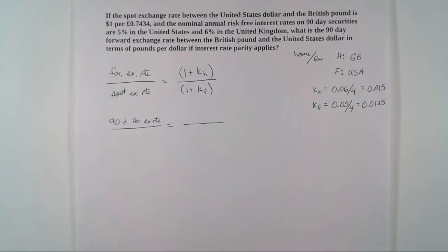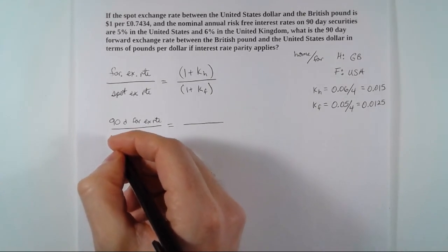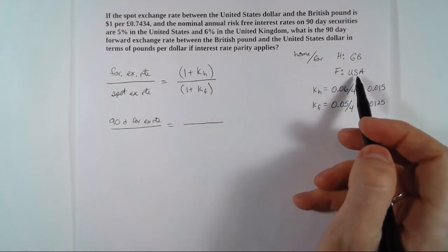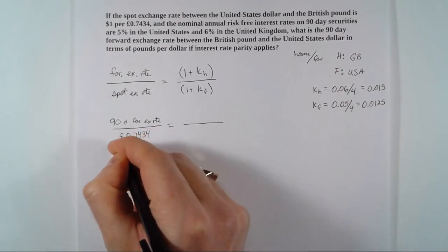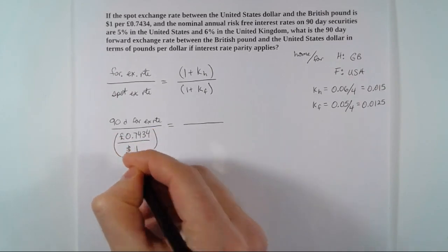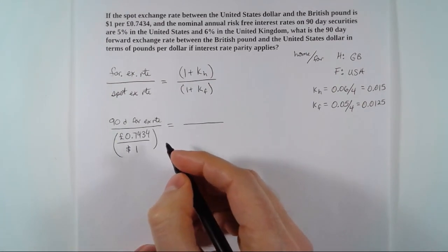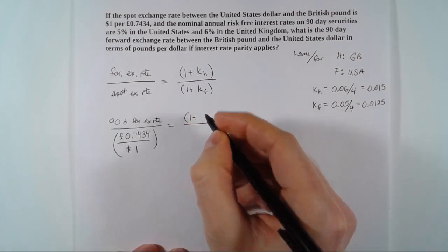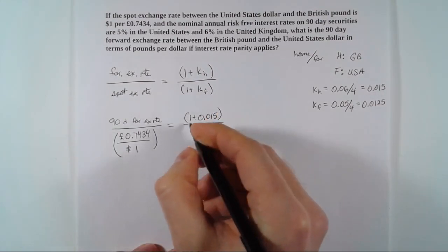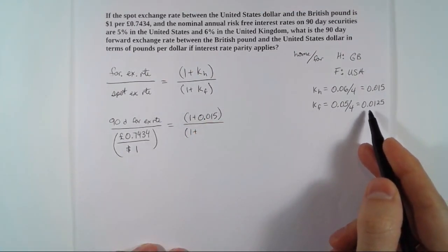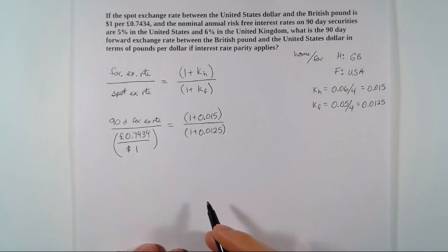Now that we have KH and KF, let's come back to our formula. The spot exchange rate needs to be in terms of home currency per one unit of foreign. We're calling the US foreign, so we put down 0.7434 British Pounds per one dollar as our spot exchange rate. Then we plug in 1 plus KH which is 0.015, and 1 plus KF which is 0.0125.